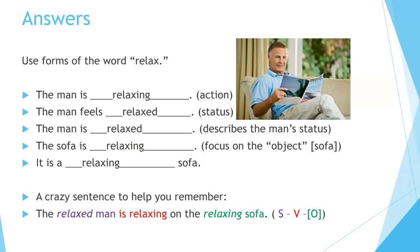Here's a crazy sentence to help you remember: the relaxed man is relaxing on the relaxing sofa. The main verb is 'is relaxing'; the subject is 'man,' and 'relaxed' describes the man. 'Relaxing sofa' — the sofa is kind of like an object here, and 'relaxing' is describing the status of the sofa.